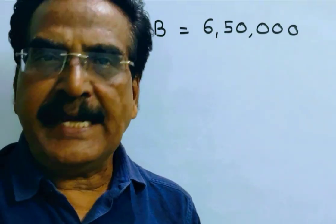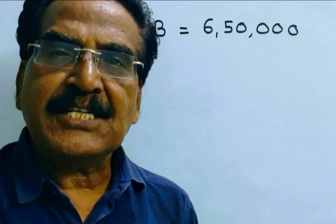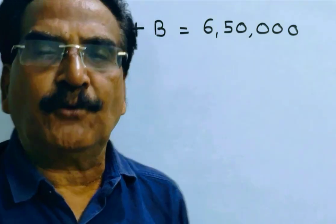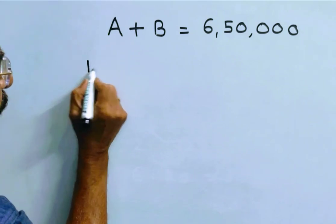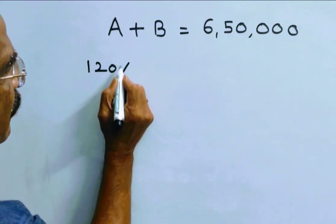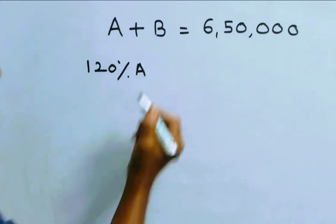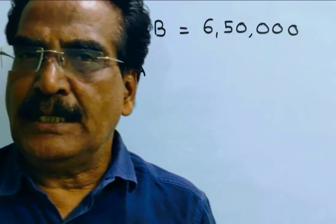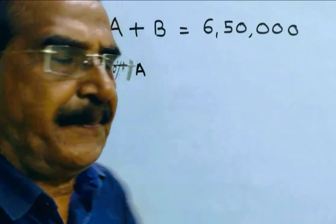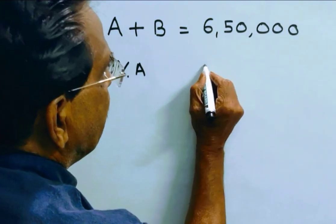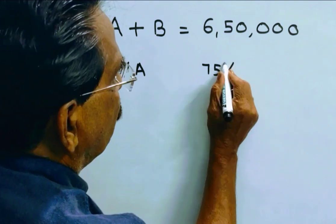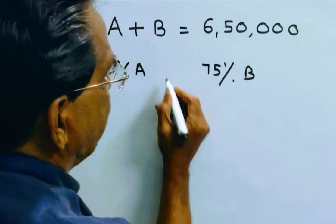Now car A is sold at a profit of 20%, so the selling price of car A will be 120% of A. And car B was sold at a loss of 25%, so the selling price of car B becomes 75% of B.